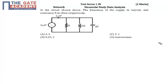Hello friends, this question is from the subject of network in the topic of sinusoidal steady-state analysis. In the question, we have given a circuit and we need to find out the frequency of the supply in radians per second and also the value of resistance R.